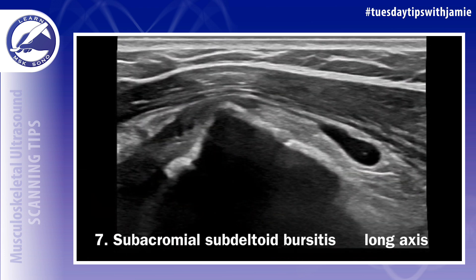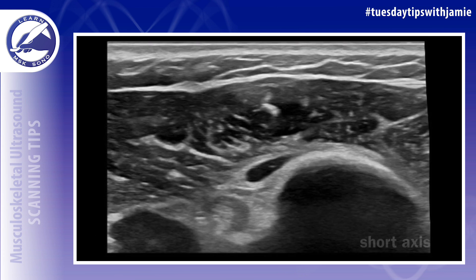Number seven: subacromial subdeltoid bursitis. Fluid may be visualized between the hyperechoic peribursal fat layers that lie between the rotator cuff tendons and the overlying deltoid muscle when bursitis is present.